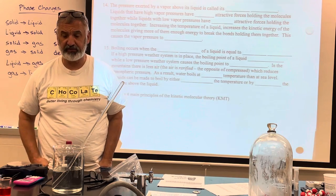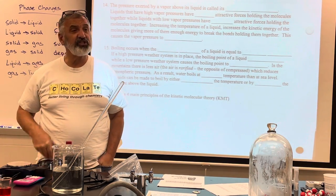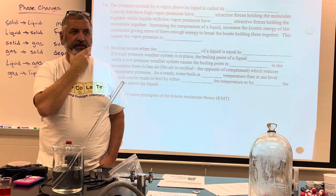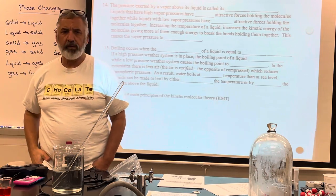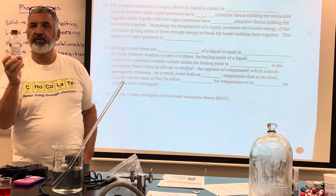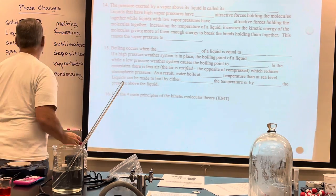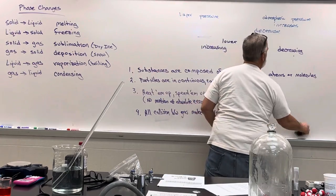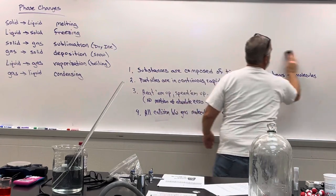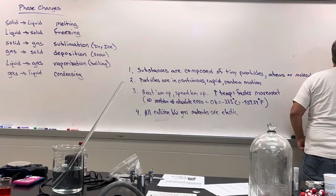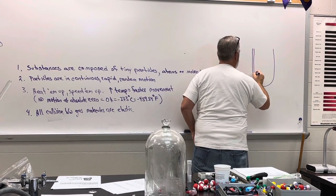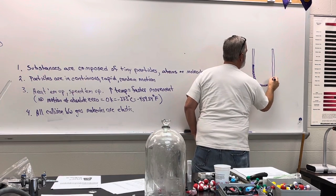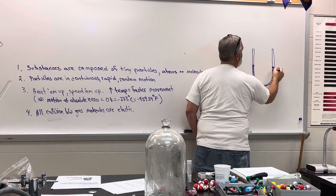What do we use to measure vapor pressure? A manometer. That's a U-tube where you push the pressure against it. In our manometer, we have a U-tube full of mercury, and with nothing attached to it, the mercury levels are going to be the same on both sides.